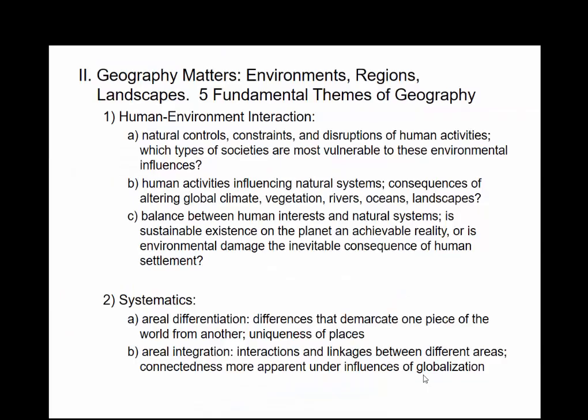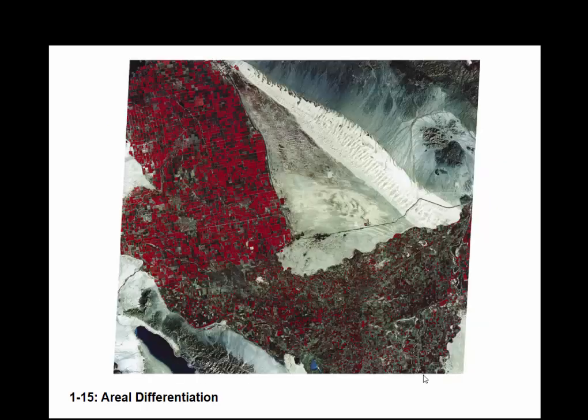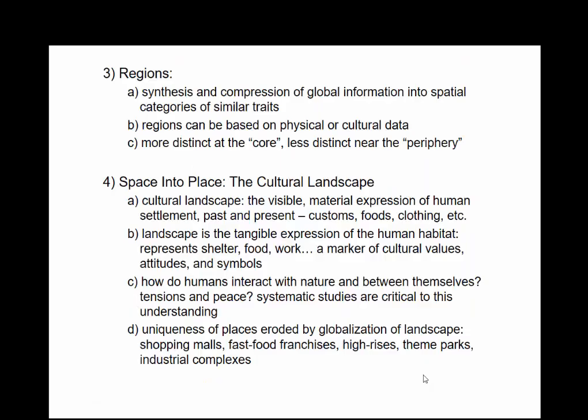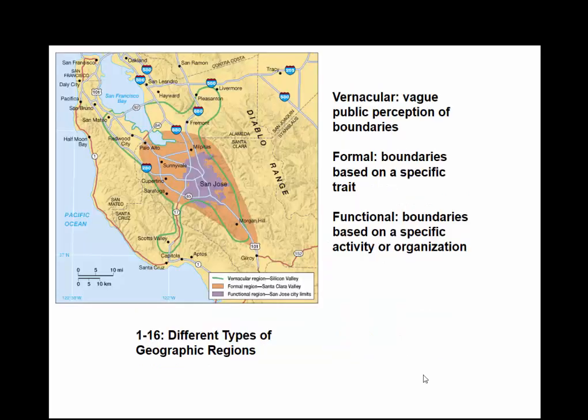When we talk about geography, there are five fundamental themes. We've got human-environment interaction — is there aerial differentiation, and what is mankind's impact on the environment? The whole idea of regions: we have more and less distinct regions. We have space and place, the cultural landscape. We have vernacular regions, formal regions, and boundaries based on a specific trait, such as an actual valley based on a definition.